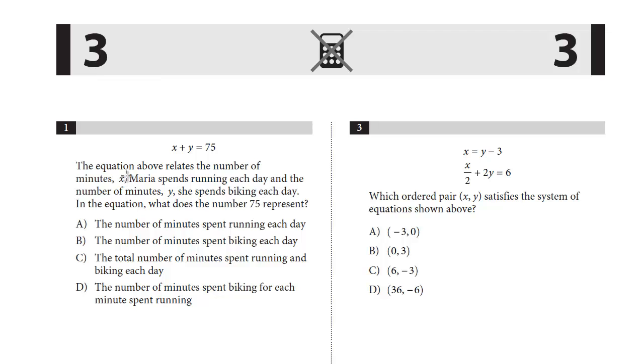Question one: the equation above relates the number of minutes x Maria spends running each day, and the number of minutes y she spends biking each day. In the equation, what does the number 75 represent? We know that x is the number of minutes running each day, y is the number of minutes biking, and the total is 75. This is just the total number of minutes she spends running and biking each day. The answer is C.